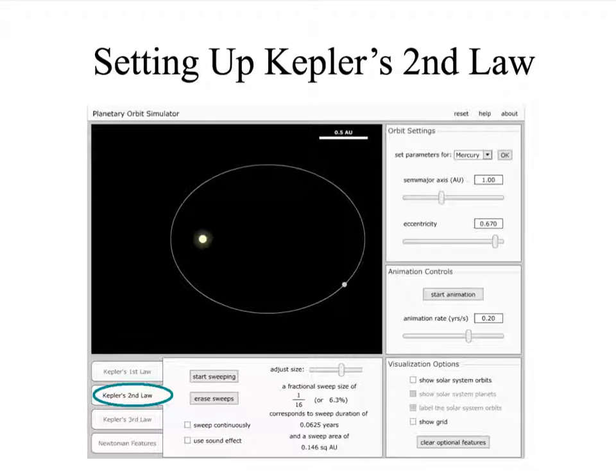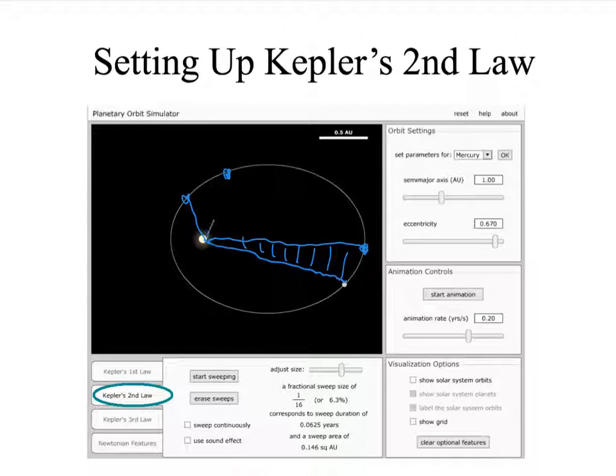Now remember Kepler's second law says that an imaginary line drawn from the Sun to the planet will sweep out an area as the planet moves, say from there to there, it'll sweep out a particular area. And if I pick the same time interval in the planet's orbit it will sweep out the same area. And what that means is that over on this side the planet will be going faster and on this side the planet will be going slower.